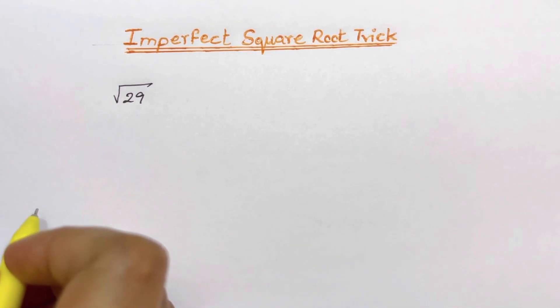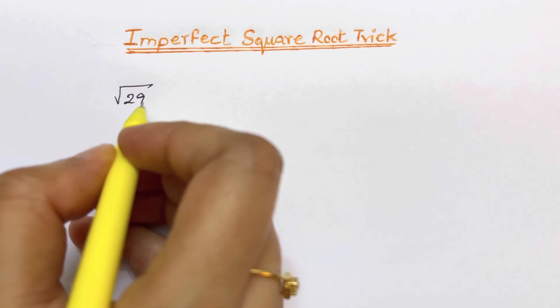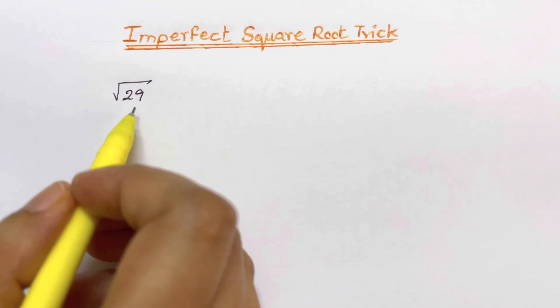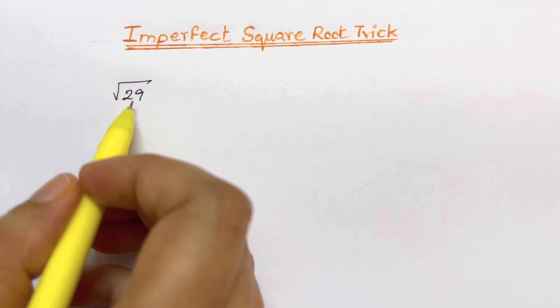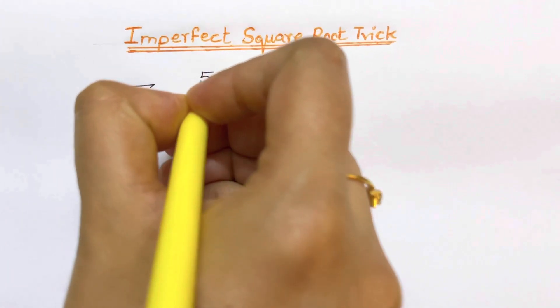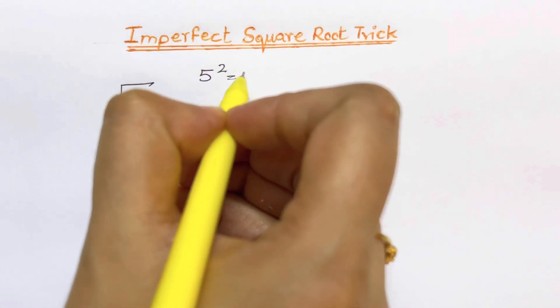Now for imperfect numbers, you need to find out the nearest perfect square to the number 29. So for example, we have the nearest square number to 29, that is 25. We can write it as 5 squared equals 25.